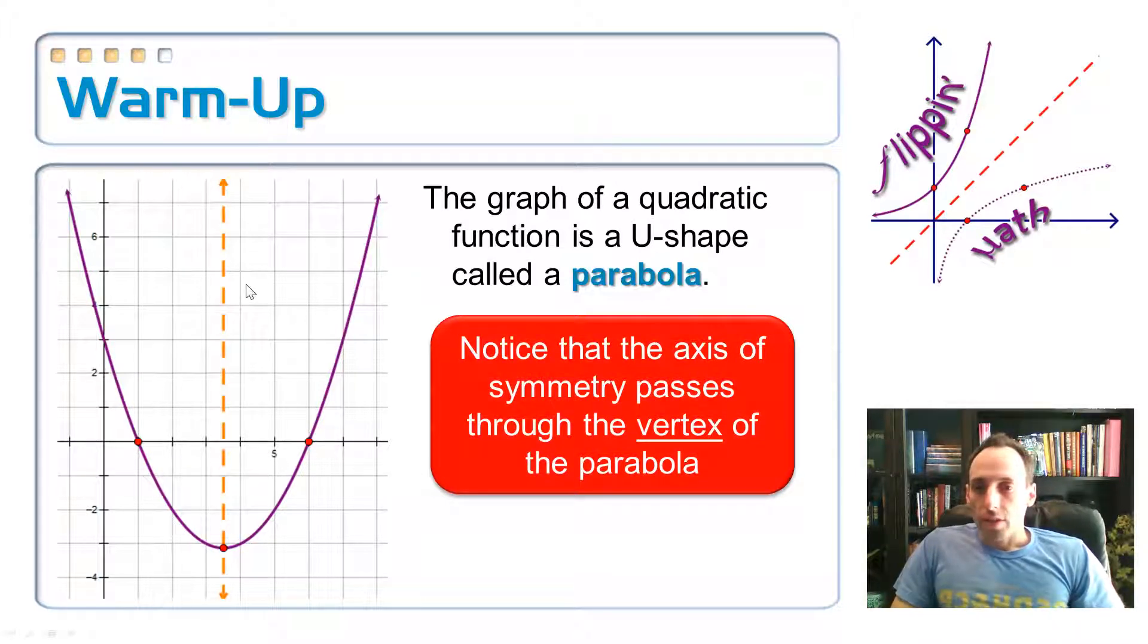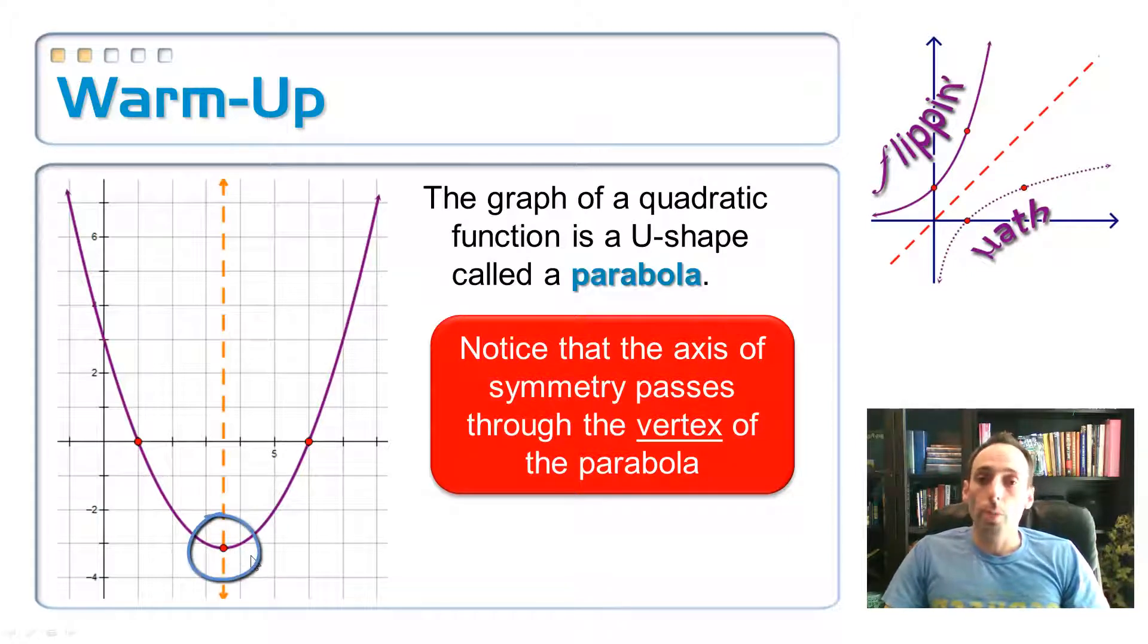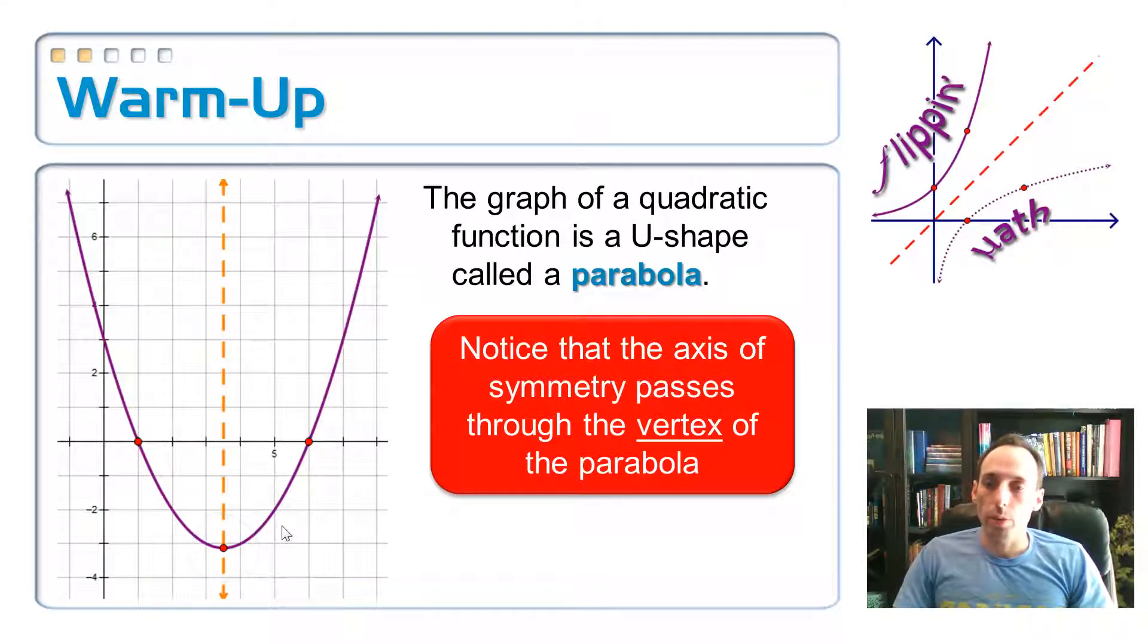Also notice that this axis of symmetry passes through the vertex point on our parabola, and that's a pretty useful piece of information. As a matter of fact, it's going to help us figure out how to come up with the coordinates given the equation for a quadratic equation.